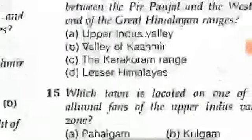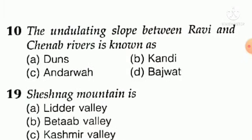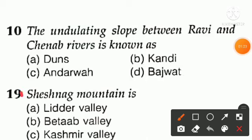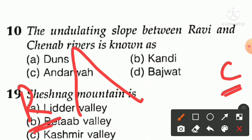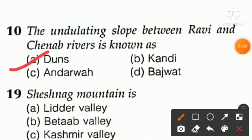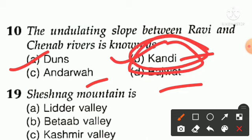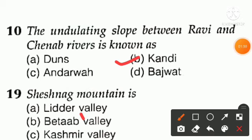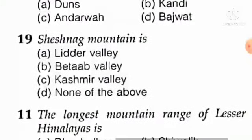The undulating slopes between Ravi and Chenab on both sides are known as a specific local term — option B is the right answer for question number ten.